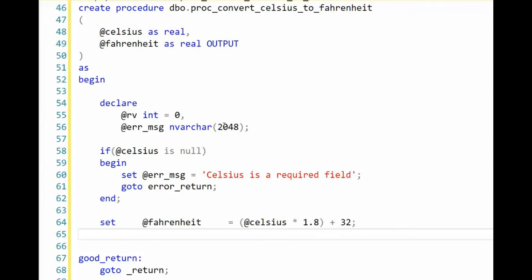In this last example, we're going to create a procedure, procedure name. My input parameter is the Celsius, a subtype real. And notice that my second variable, Fahrenheit, is also real, but it's an output variable. Then I say as begin. And then I test to make sure that my Celsius input is required. And if it is not, if it's null, then I go to error return.